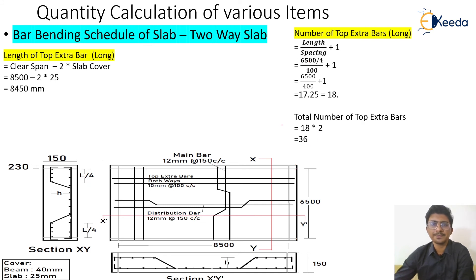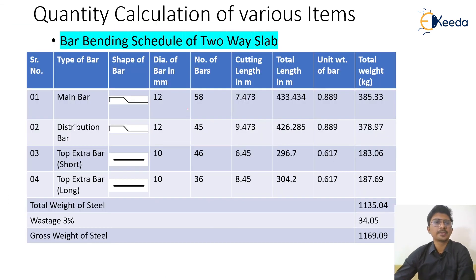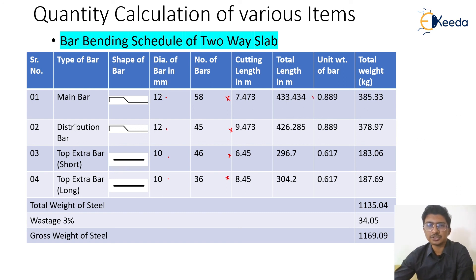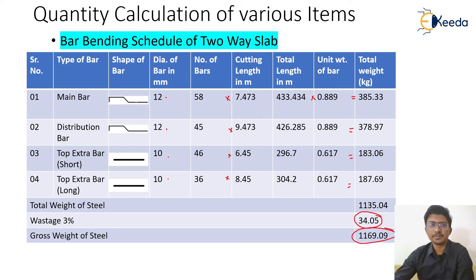The final chart gives a complete illustration: bar diameters, individual lengths, number of bars, total length (length multiplied by number), and total weight. Adding 3% wastage for reinforcement, the total weight comes to 1,169 kg. This completes the quantity calculation for the two-way slab reinforcement. I wish you all the best — thank you.